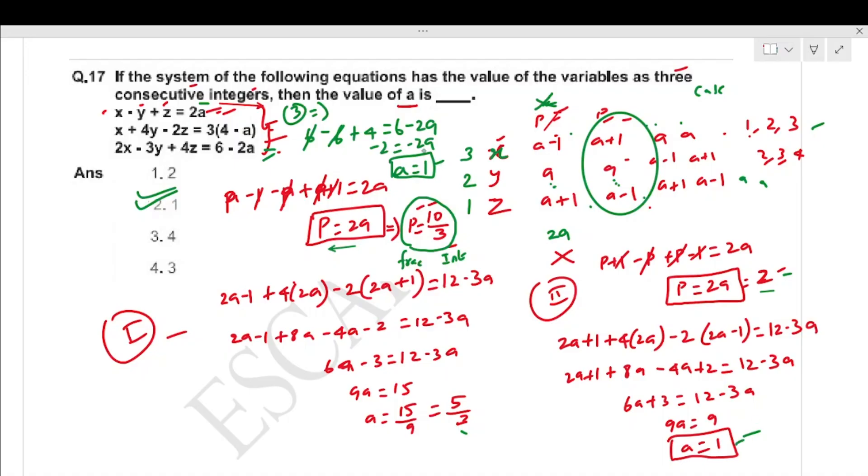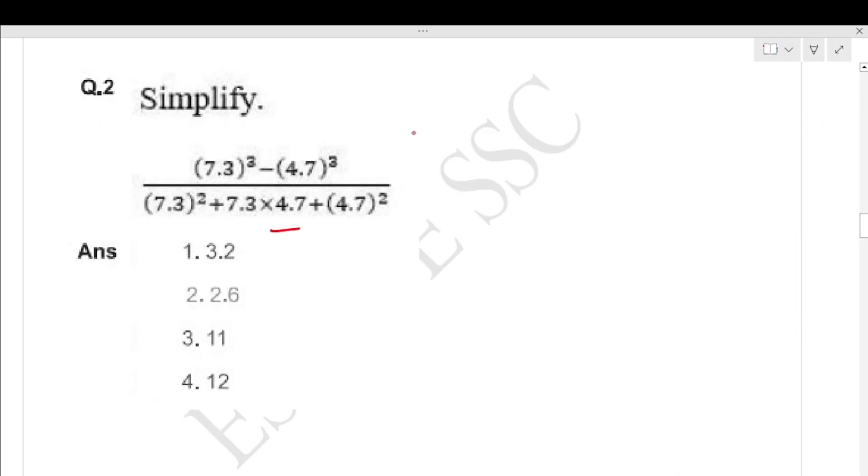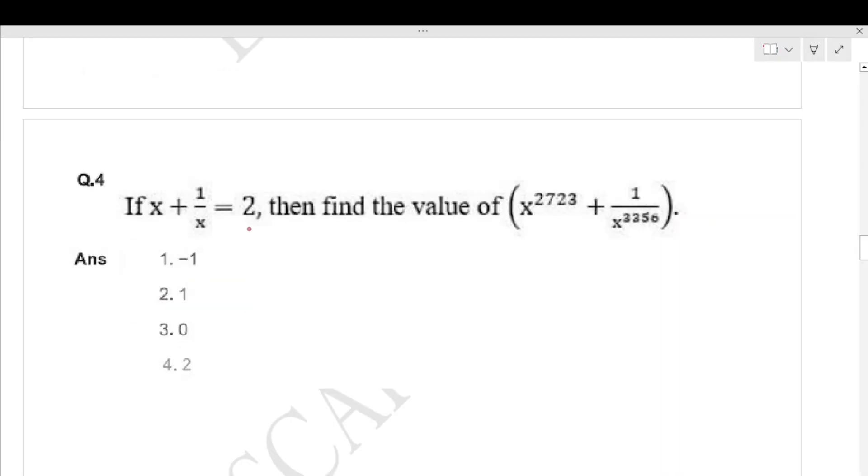Next question: a squared plus ab plus b squared. This is a minus b formula. 7.3 minus 4.7 is 2.6. Second option is correct. X plus 1 by X equals 2, so X equals 1. 1 plus 1 equals 2. Fourth option is correct. And the concept is easy.